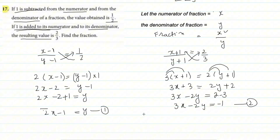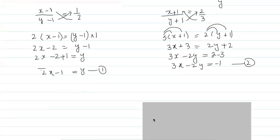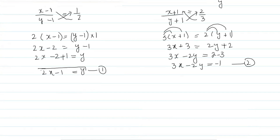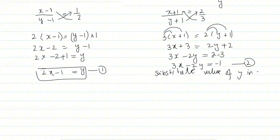We have two methods to solve the first and second equations simultaneously: substitution method and elimination method. We use the substitution method. Substituting the value of y from equation one into equation two: 3x − 2(2x − 1) = −1.